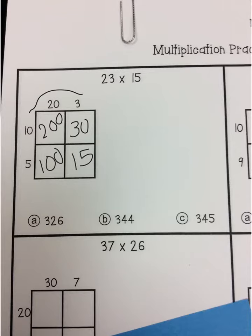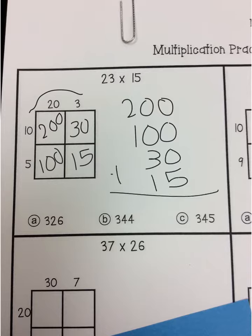Once we filled in all of the boxes on our array, we're going to go ahead and add them together. I like to group mine by similar place value. So I see the 200 plus the 100 plus the 30 plus the 15. Add them all together. Our answer would be C, 345.